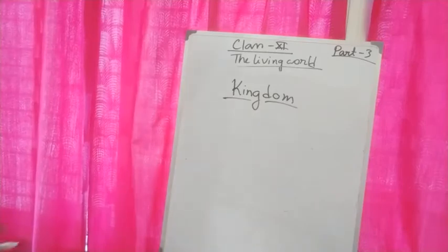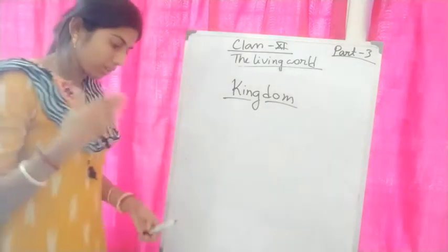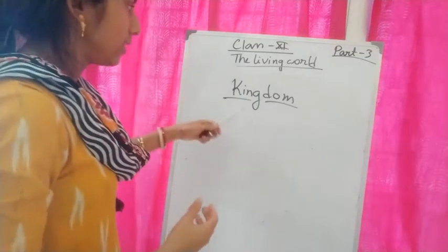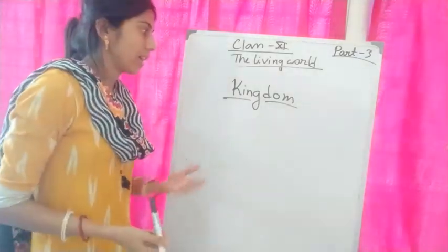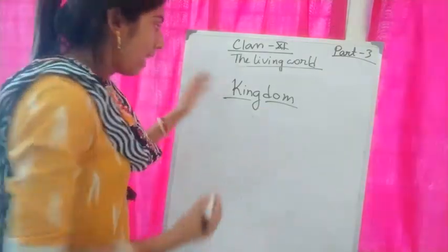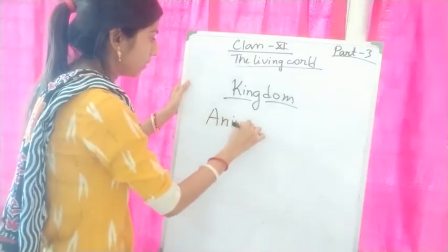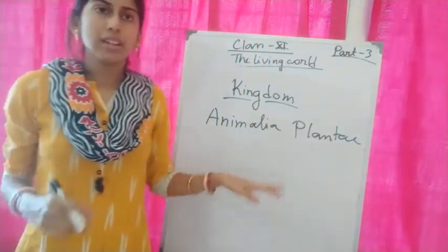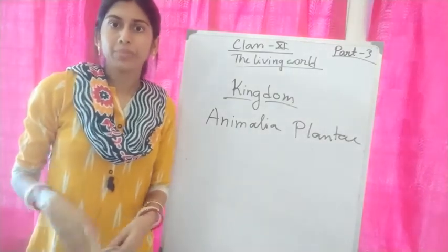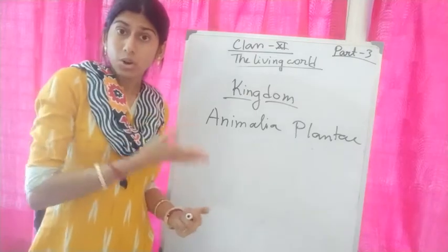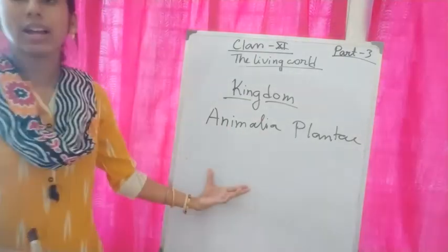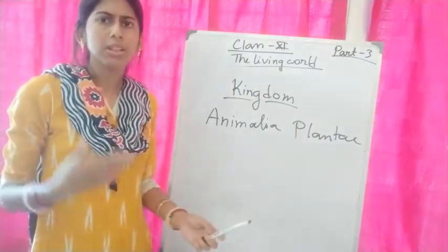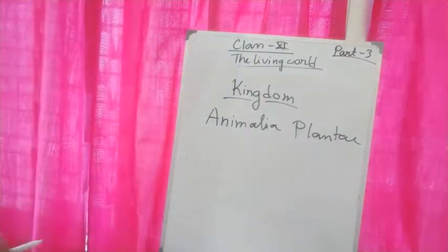Kingdom is the highest category. All animals belonging to different phyla are assigned into a kingdom. All phyla with similar characters are under a kingdom. We have two kingdoms: Animalia and Plantae. Under Animalia we find phyla like porifera, cnidaria, echinodermata, platyhelminthes, annelida, chordata, and hemichordata. Under Plantae we find algae, gymnosperms, and angiosperms.